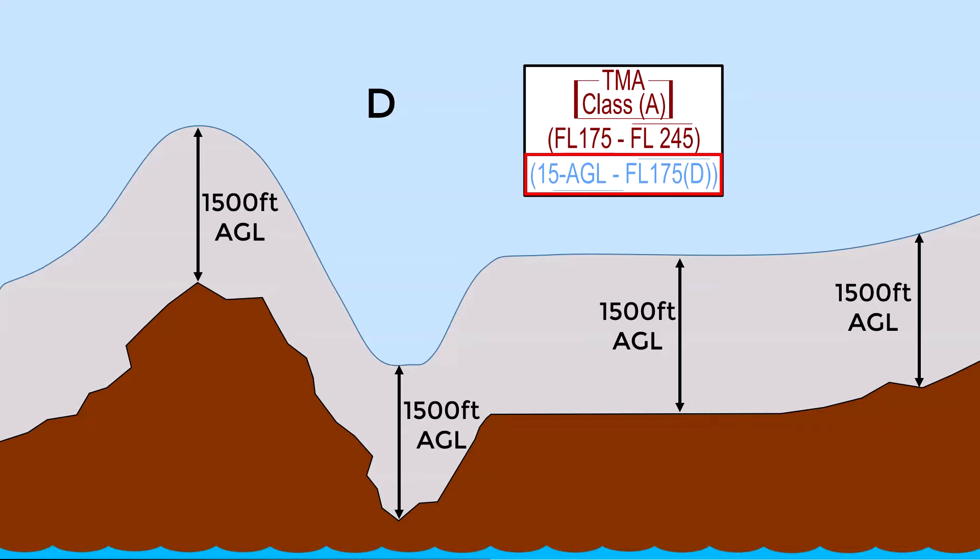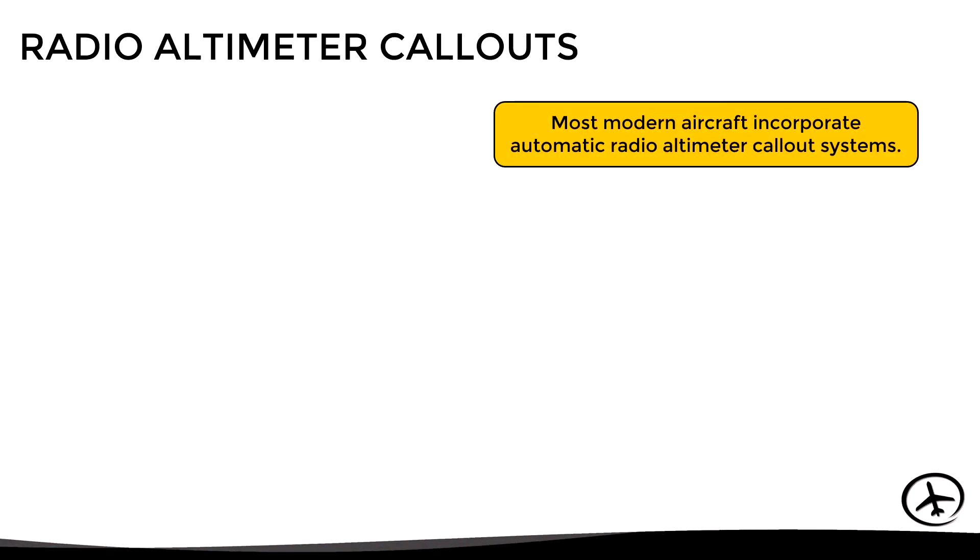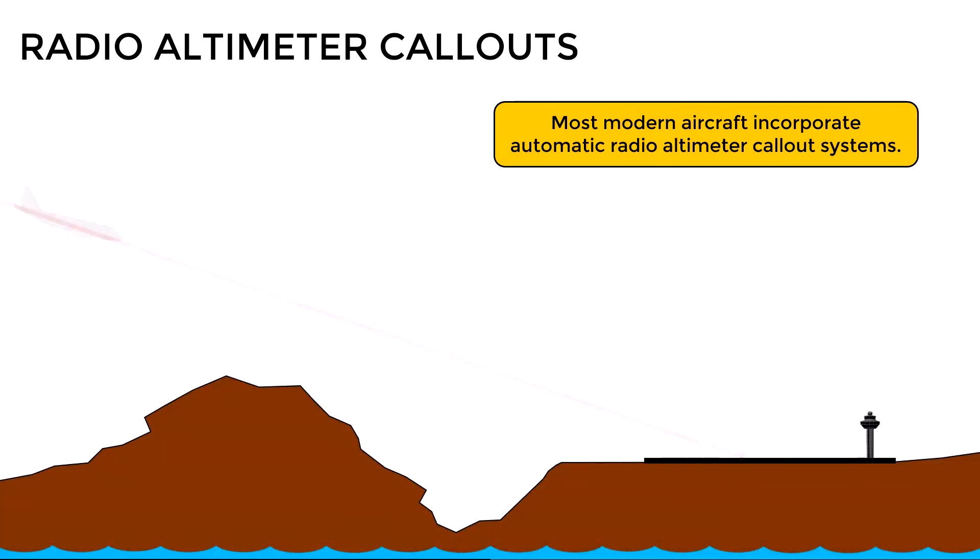Another situation where AGL heights are used is for example in the radio altimeter callouts. The thing is that most modern aircraft incorporate automatic radio altimeter callout systems. These are very helpful for the flight crew since it tells them what is the current height above terrain in real time, increasing their situational awareness. For example, suppose an aircraft is approaching to land at this airport. As it descends below a certain height above terrain, the radio altimeter will begin to indicate the height through callouts.